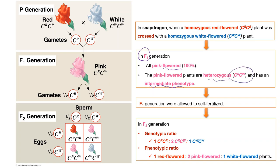If we allow the F1 generation to self-fertilize or cross F1 with other F1s, and work through the Punnett square, at F2 the genotypic ratio obtained is 1 CR-CR, 2 CR-CW, and 1 CW-CW. This gives rise to a phenotypic ratio of 1 red flower, 2 pink flowers, and 1 white flower.